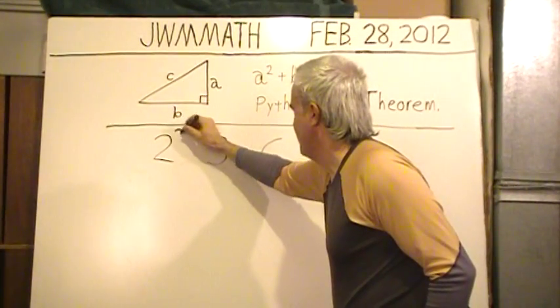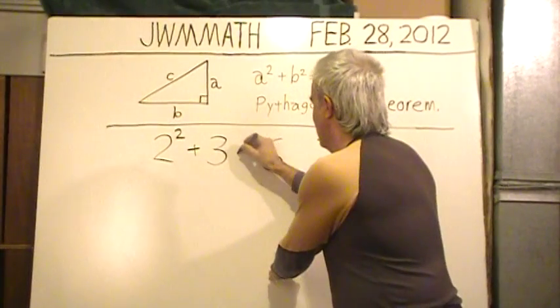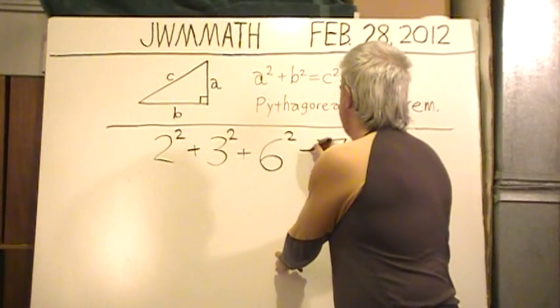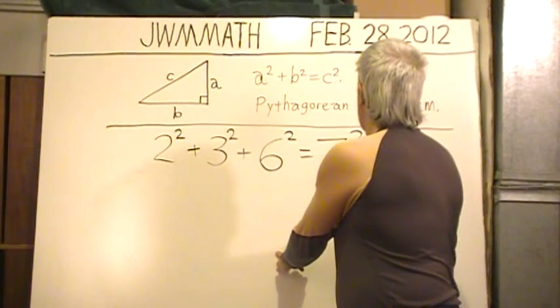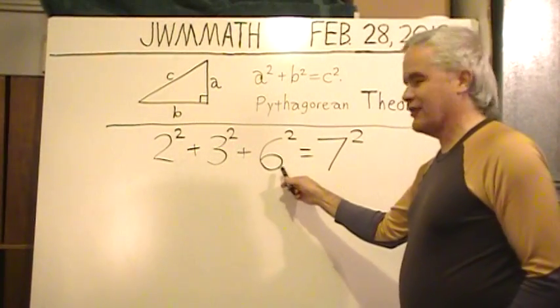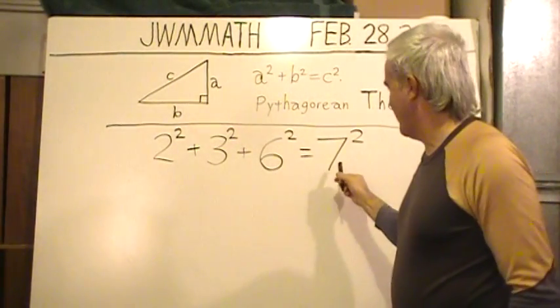All right. Two, three, six, seven. Well, I am claiming that this is true: two squared plus three squared plus six squared equals seven squared.